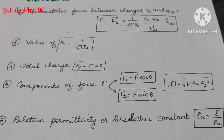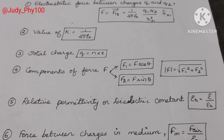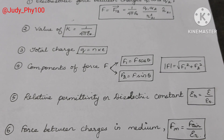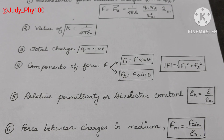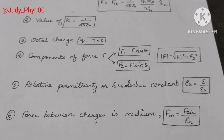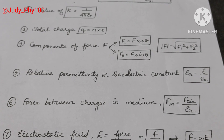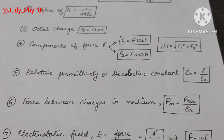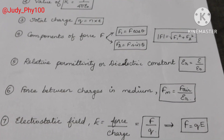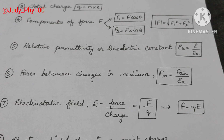Relative permittivity or dielectric constant: epsilon r is equal to epsilon divided by epsilon naught. Force between charges in a medium: F medium is equal to F air divided by epsilon r. Electrostatic field E is equal to force divided by charge, F divided by q; that is, F is equal to q into E.